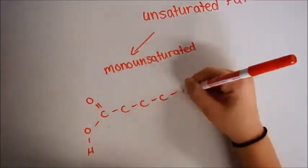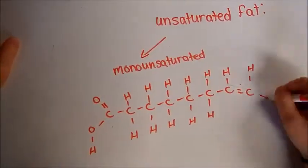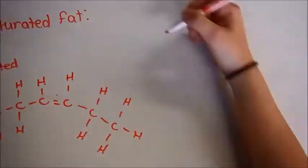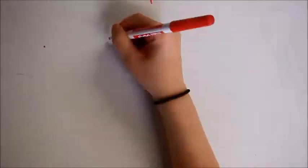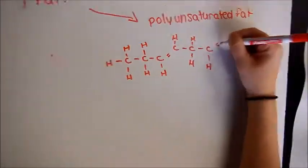Here is a full diagram of the molecular structure of unsaturated fats being drawn out. First is a monounsaturated fat on the left with one missing hydrogen atom. Second, on the right, will be polyunsaturated fat with multiple missing hydrogen atoms.